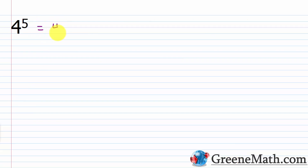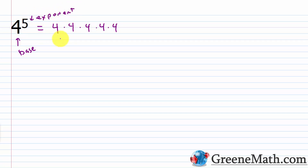As another example we have 4 to the 5th power. To evaluate this we would have 4 times 4 times 4 times 4 times 4 — 5 factors of the base 4. The base is 4 and the exponent is 5. We can do this without a calculator: 4 times 4 is 16, 16 times 4 is 64, 64 times 4 is 256, and 256 times 4 is 1,024. An easy mental math trick: 250 times 4 is 1,000, then 6 times 4 is 24, and adding those gives you 1,024.